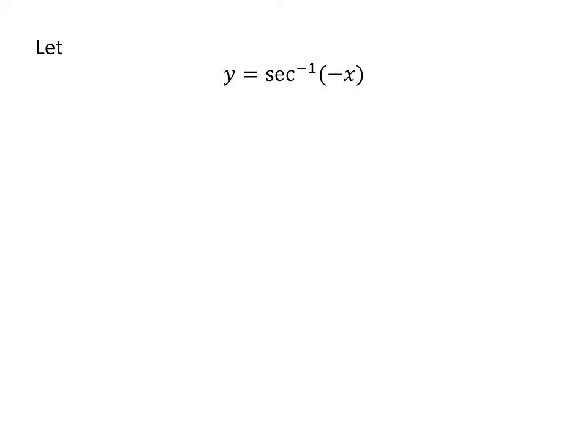To prove the identity, let us assume y is equal to arc secant of minus x. As secant is the inverse of arc secant, secant of y is equal to minus x.